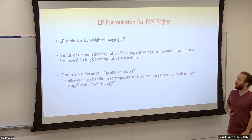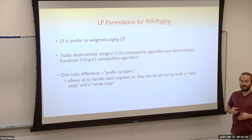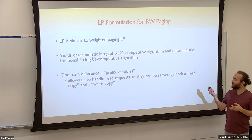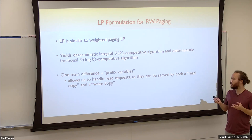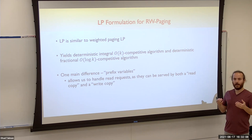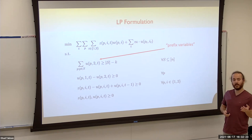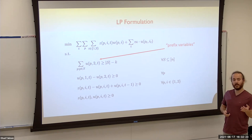The LP formulation is similar to the LP for weighted paging and gives us a way to obtain both the integral and the fractional competitive algorithms. The main difference in the formulation is that instead of using a variable for each page, we use a prefix variable — for each type of page we have a variable indicating how much we need to load so that the sum of all copies that can serve the request will be in the cache. We use the prefix variables to determine if a request is satisfied and if the cache is valid.